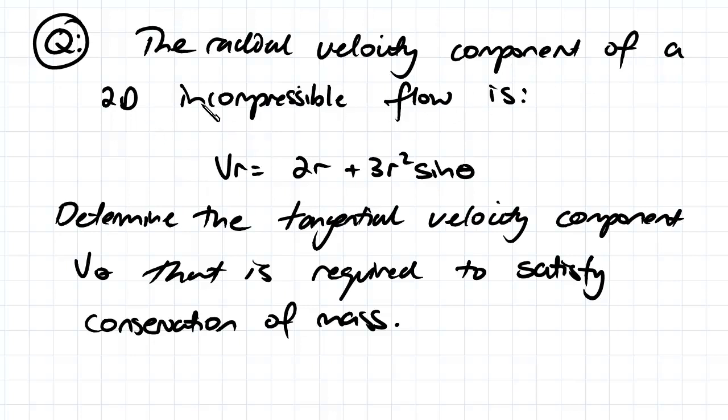We've got a 2D incompressible flow, and what we need to do is determine the tangential velocity component v theta that is required to satisfy conservation of mass.